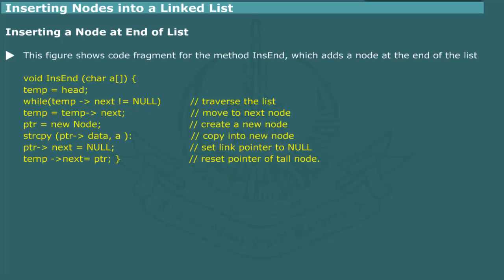The next figure shows the code fragment for the method Insert End, which implements the procedure for inserting a tail node. It performs these steps: first, traverse the list; then create a new node; then copy data into the new node; set the link pointer to null; and finally, set the pointer of the tail node.